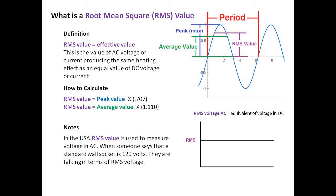So to calculate the RMS value, you can take the peak value times 0.707, or you can simply divide the peak value by the square root of two. If you were to get the average value, you can times that by 1.11 to get the RMS value.